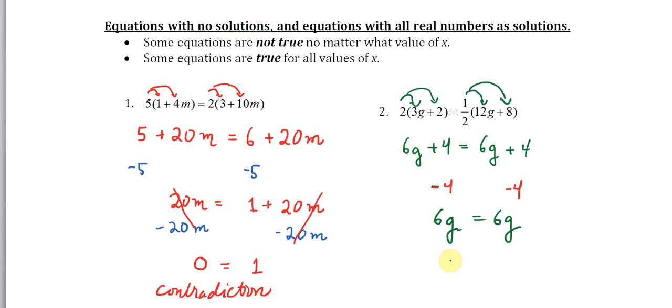Then I can subtract 6g from both sides and I end up with zero equals zero. So what we have here are two very unusual equations.